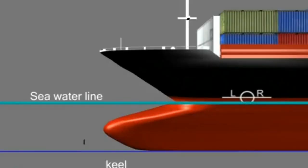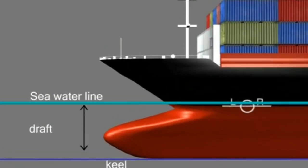Plimsoll line marks allow one to know the safe draft. Draft is the vertical distance between the water line and the bottom of the hull or keel. The heavier the load, the more is the draft length.